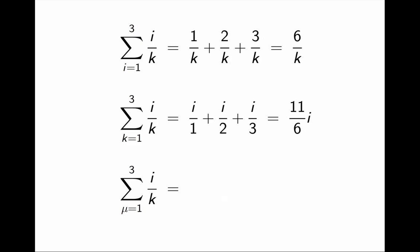What about the third sum? The summation index is μ. For the purpose of the sum, both i and k are constant. So the thing I am adding, i over k, does not change from term to term. I am just adding it three times. i over k, plus i over k, plus i over k, which is 3 times i over k.